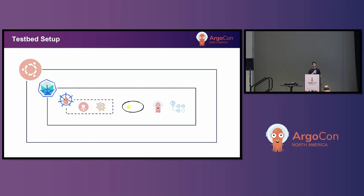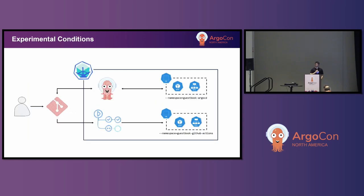To ensure consistency, I use the same sample application deployed by both tools, and also run the experiments multiple times using a script to ensure the pattern remains consistent throughout. For the experimental conditions, the developer commits a change to Git, which triggers the deployment using both tools — they deploy the same application but to two different namespaces, just to manage them separately while keeping the workload consistent.